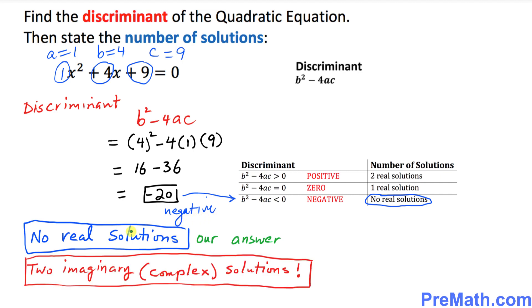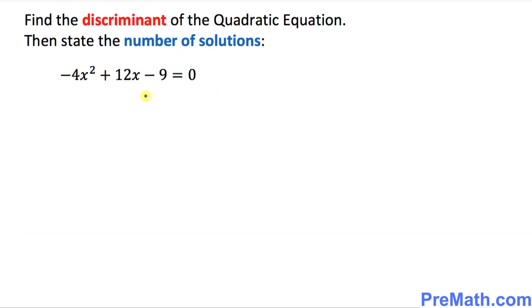If there are no real solutions, that means our solutions are going to be imaginary or complex — two imaginary or complex solutions. We call them imaginary solutions because they involve the value i, which stands for imaginary numbers. Now let's look at our next example.